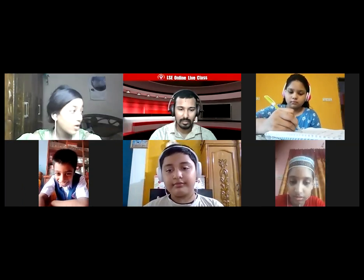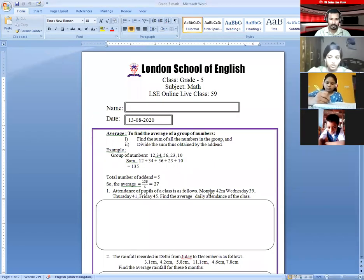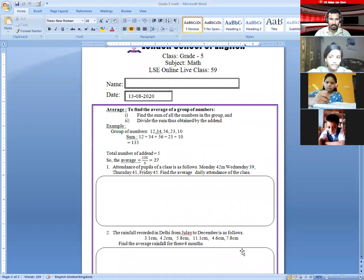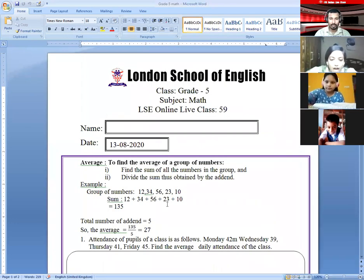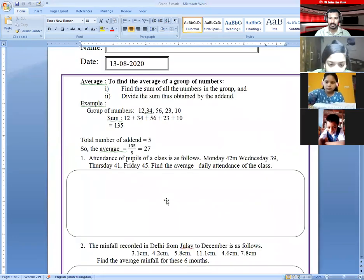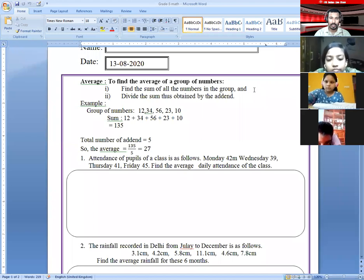I am sharing the worksheet of today's class. Can you see the worksheet everyone? Today we will do math. Finding the average. This is very simple. Look at the question - find the sum of all numbers in the group. I'm marking it: 12, 34, 56, 23, and 10. These are the five numbers, right?